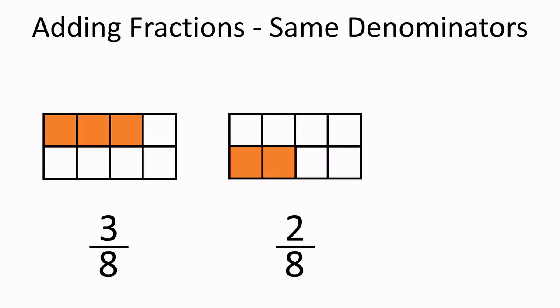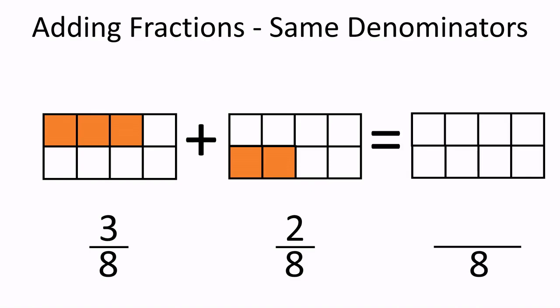Let's practice. How much is 3 over 8 plus 2 over 8? Both fractions have the same denominators, so we only need to add the numerators. In this example, 3 plus 2 is 5. It means 3 over 8 plus 2 over 8 is equal to 5 over 8.